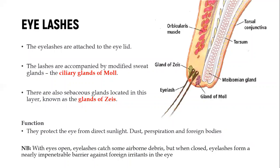Just on top of the eyelid we have eyelashes, accompanied by modified sweat glands — the glands of Zeis and the glands of Moll. These are important sweat glands found around the eyelashes. The function of the eyelash is to protect the eye from direct sunlight, dust, perspiration, and foreign bodies.